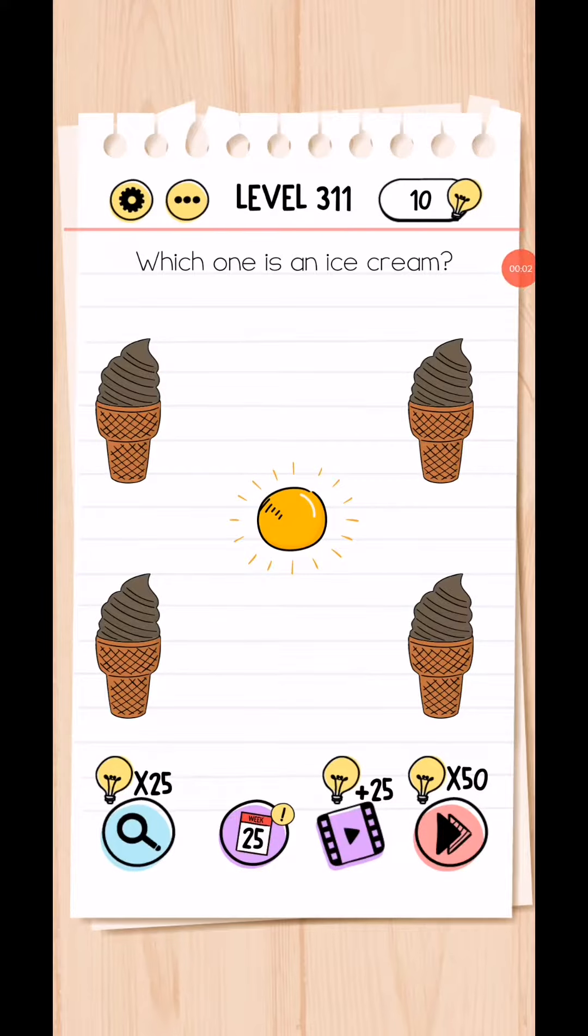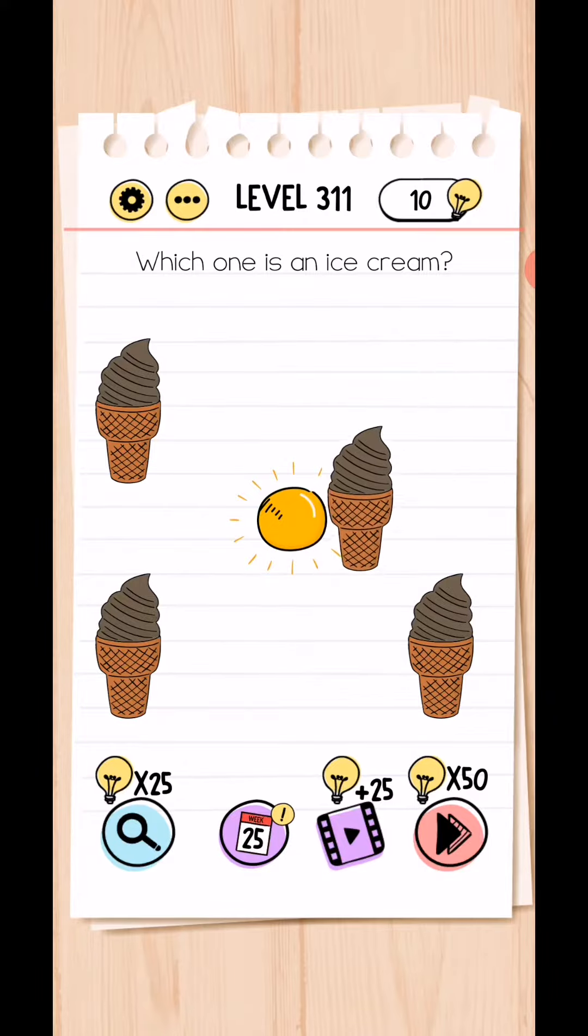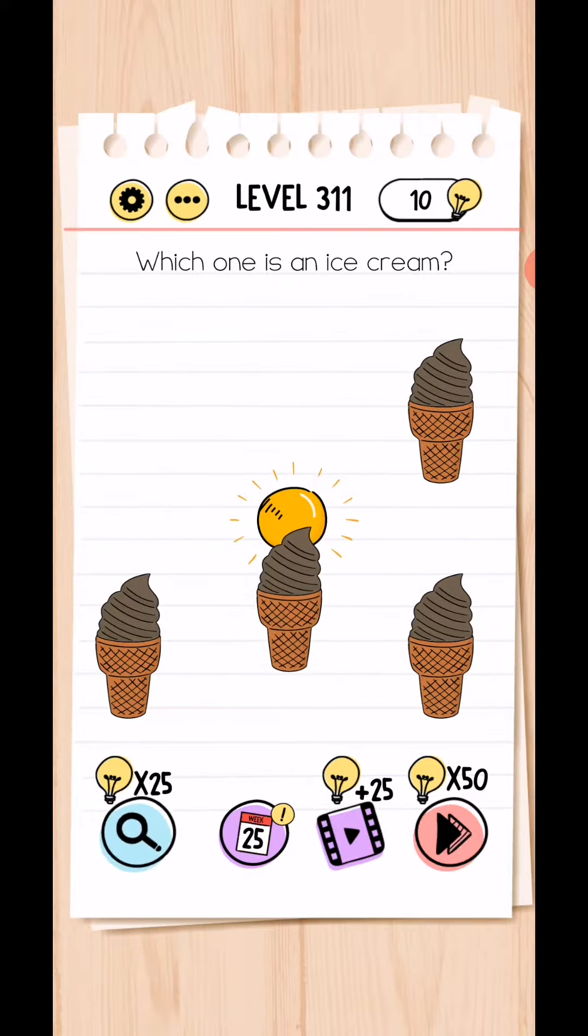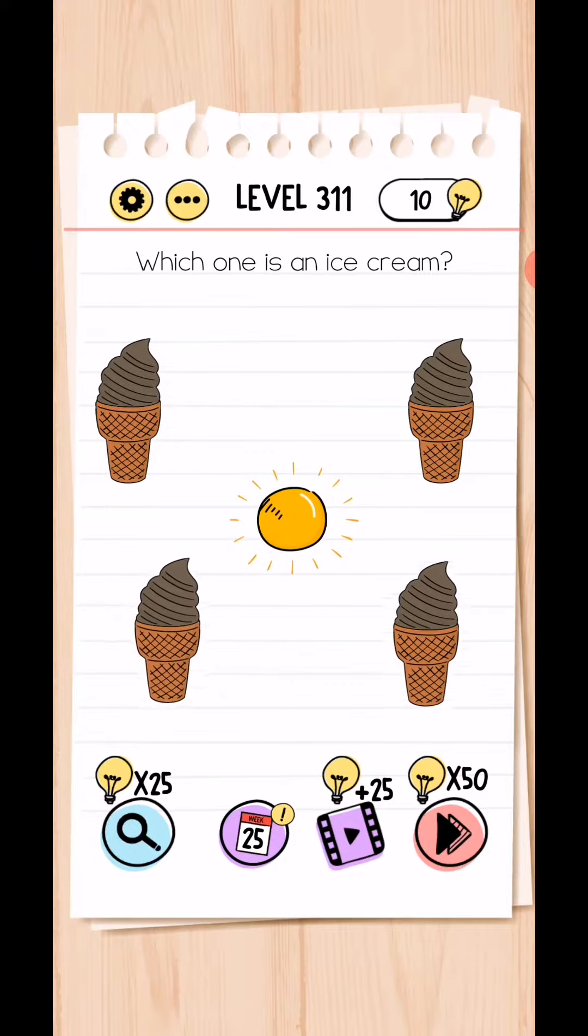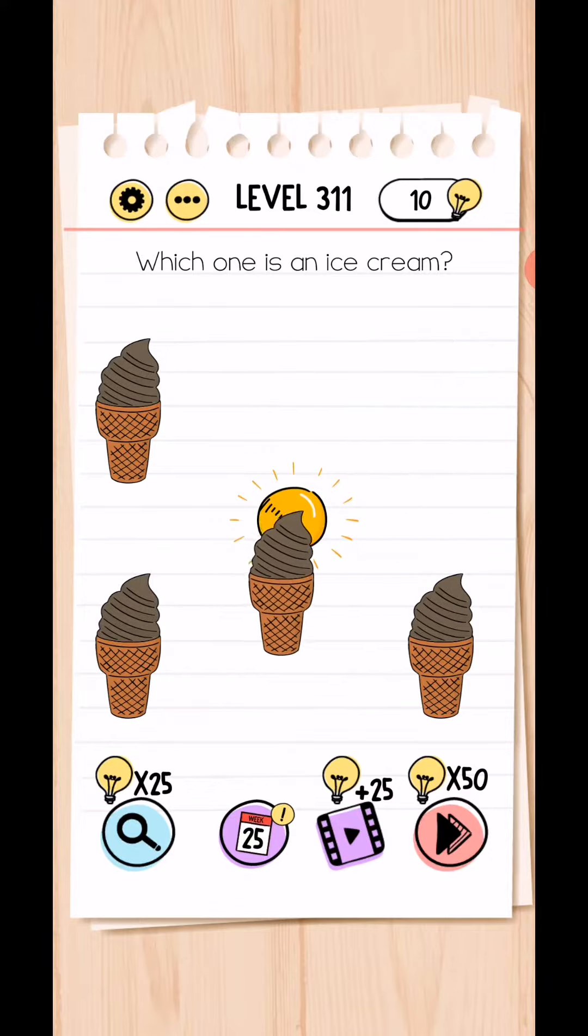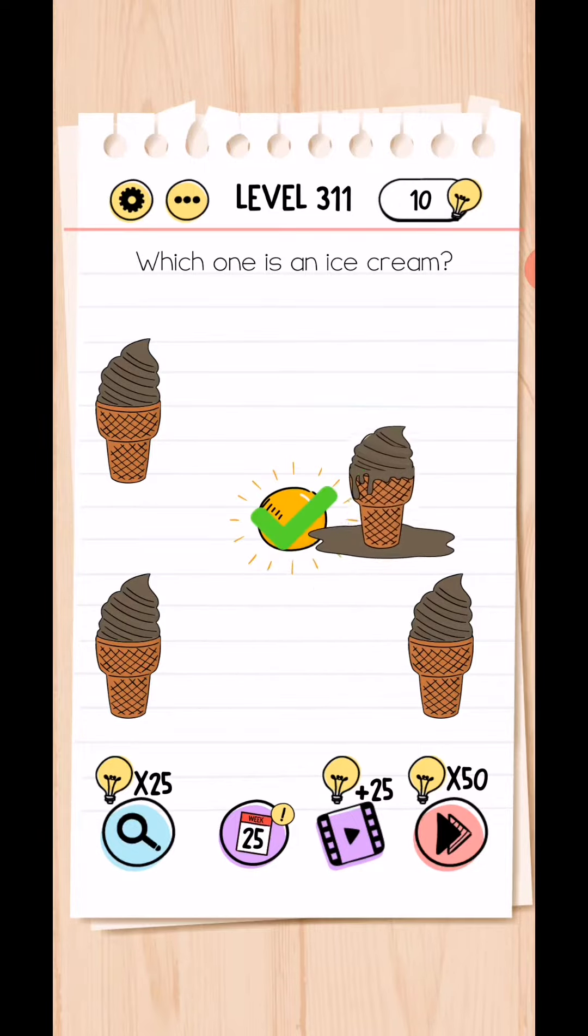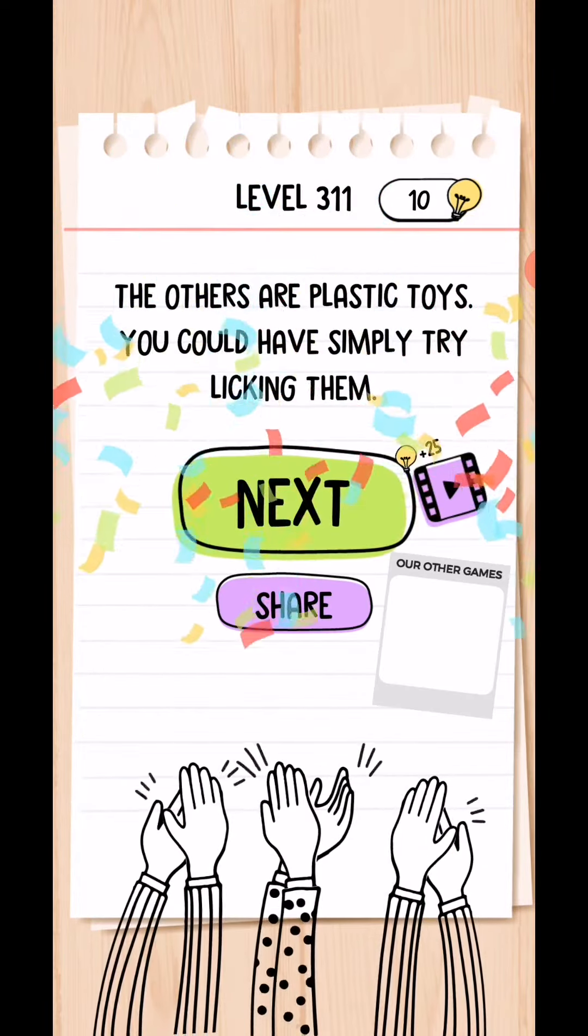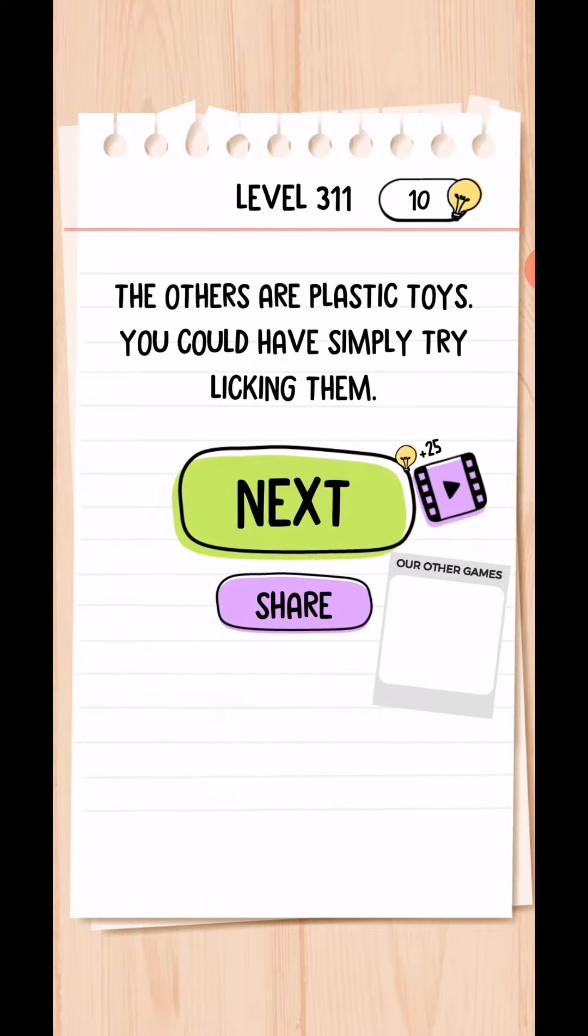Brain Test tricky puzzle, level 311 to 315. Which one is an ice cream? Move in front. Tap and hold here, move and hold. Okay, the others are plastic toys. You could have simply tried licking them.